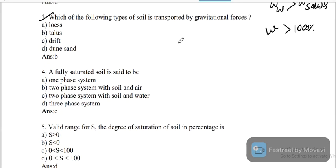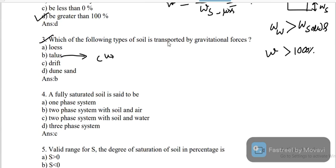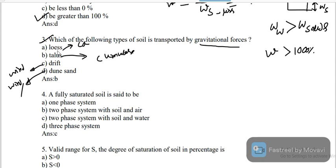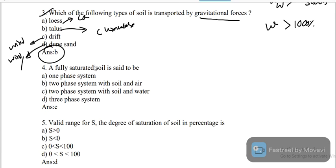Question 3: which of the following types of soil is transported by gravitational force? Options are loess, talus, drift, and dune. Talus is basically transported by the force of gravity. Drift and dune are driven by wind or water. Loess is a uniformly graded sandy or silty soil containing calcium compounds. So the correct answer is option B, talus.